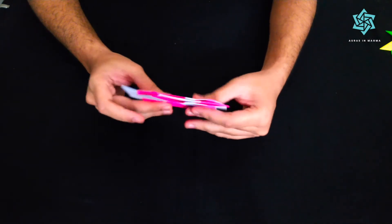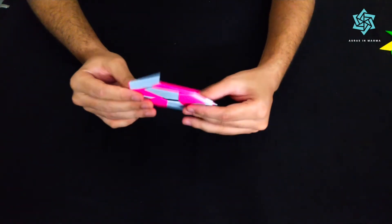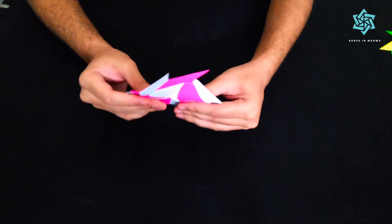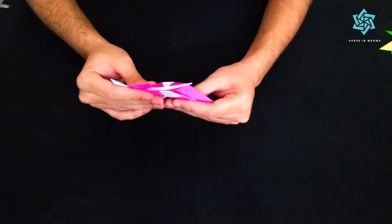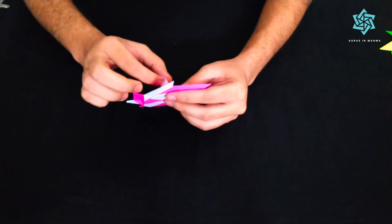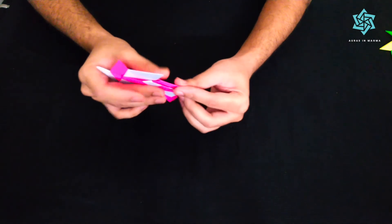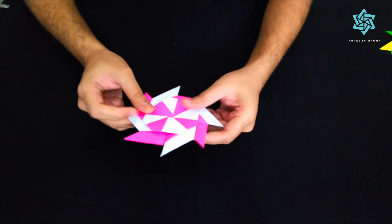So for that we'll just fold all of these. We'll just push all of these towards the inside part. And there you go. There's your shuriken.